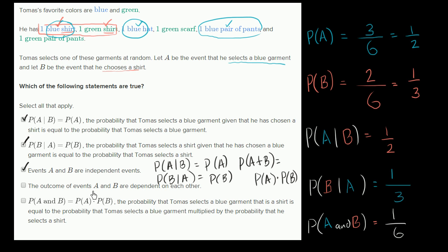The statement that the outcome of events A and B are dependent on each other is false — that's the opposite of saying they're independent, so we can cross that out. The probability of A and B equals probability of A times probability of B is true: one sixth equals one half times one third. The only false statement is that the outcomes of events A and B are dependent on each other.